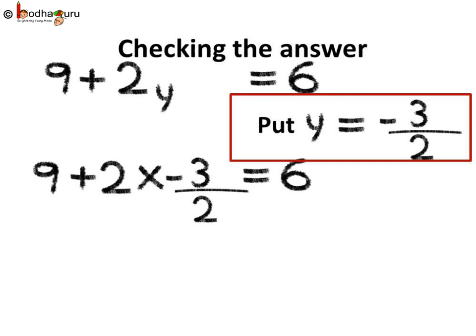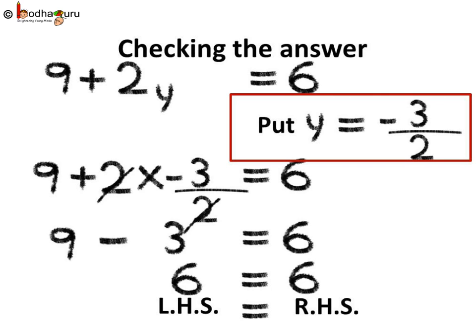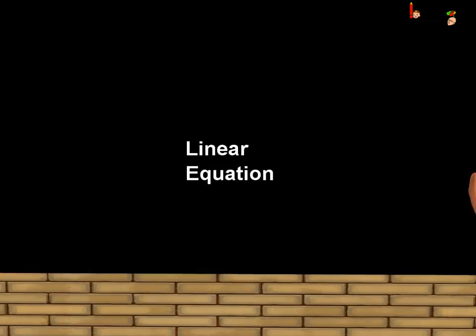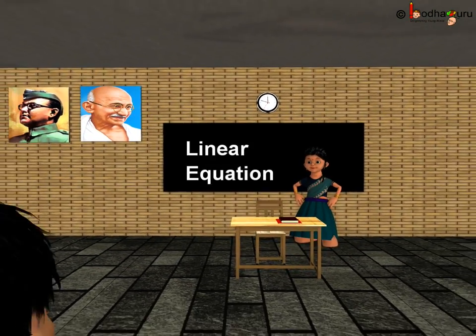Solving the LHS further, 2 in the numerator and 2 in the denominator cancel, giving us 9 minus 3 on the LHS. 9 minus 3 is equal to 6. So 6 equal to 6, which means LHS equal to RHS. Hence y equal to minus 3 by 2 is confirmed as the solution of this linear equation. So now you know what a linear equation in one variable is, how to solve it, and how to check whether your solution is correct. Bye bye children!